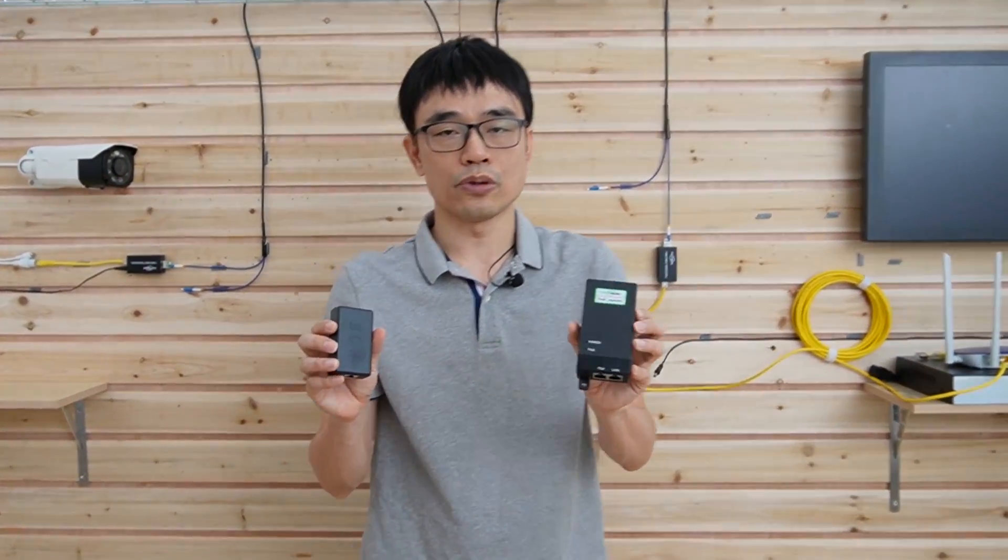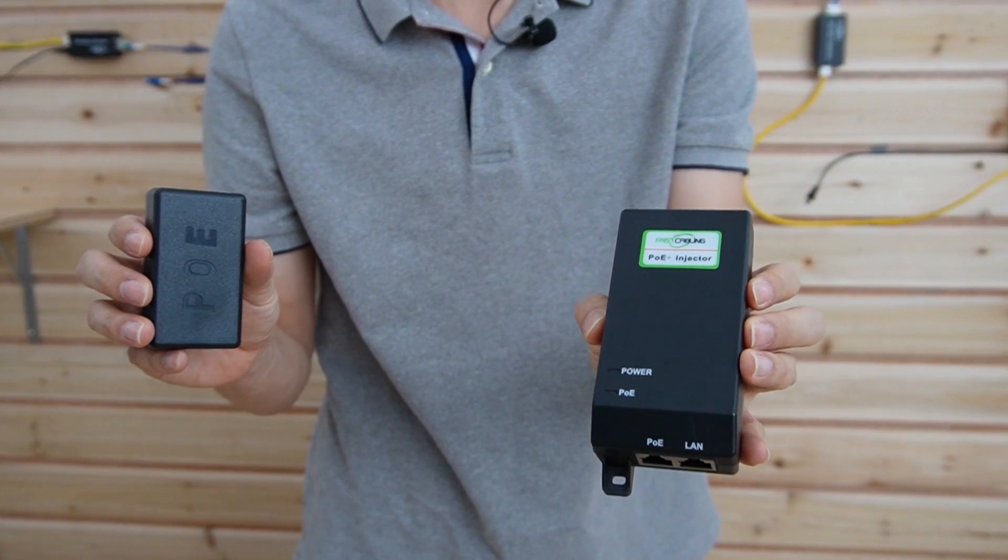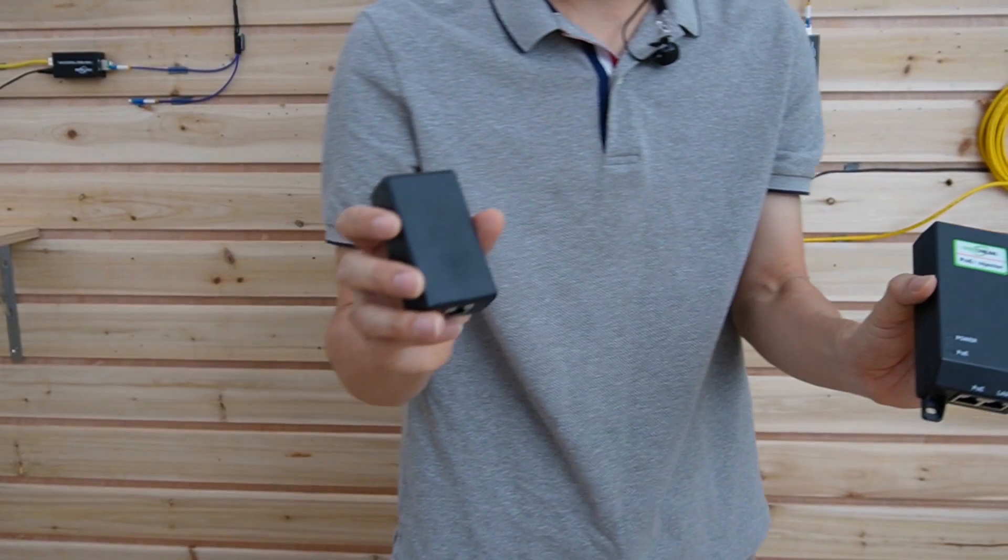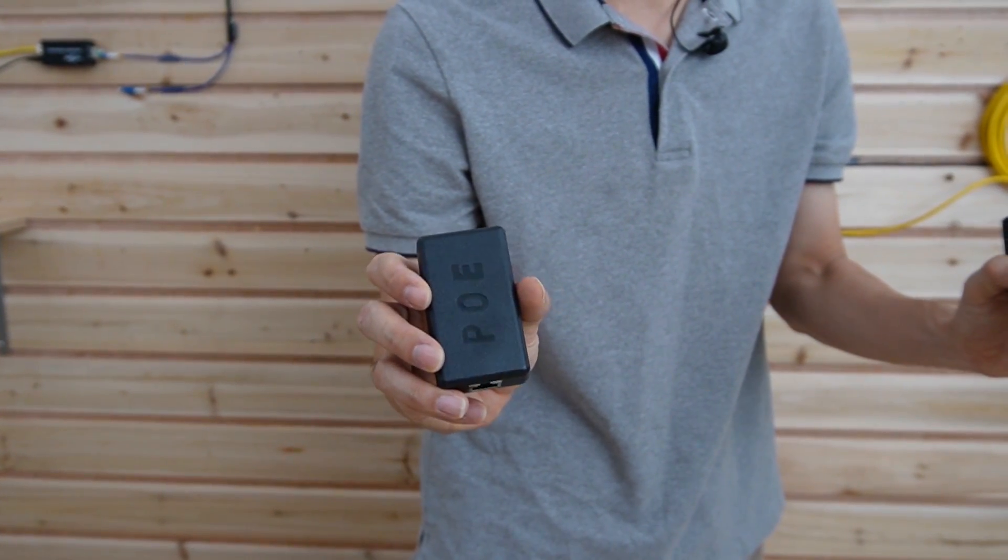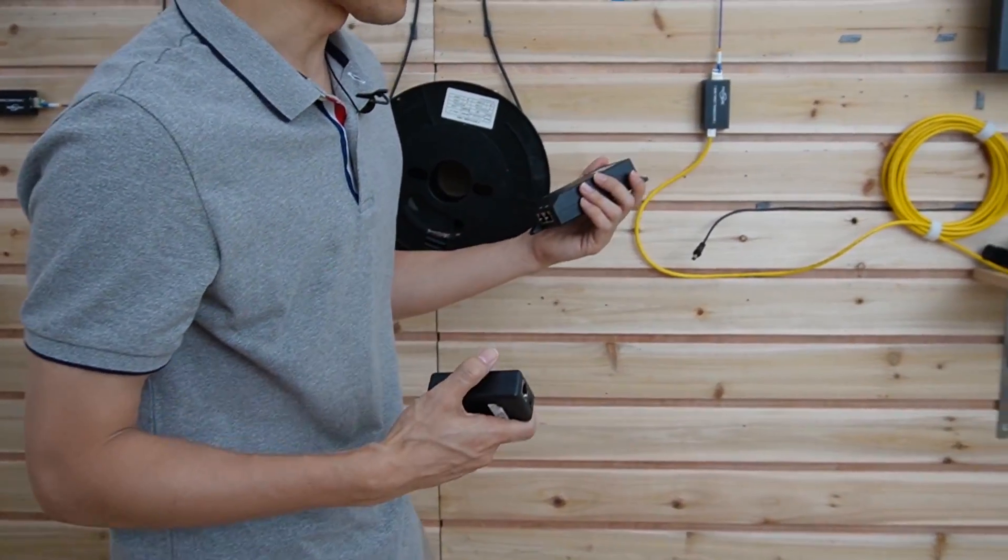First is the PoE injector. This injector will inject, I mean, just add the power to the Ethernet cable, the Cat5 or Cat6. And next to the media converter, we also need this PoE splitter. Okay, now let's just make a quick connection.